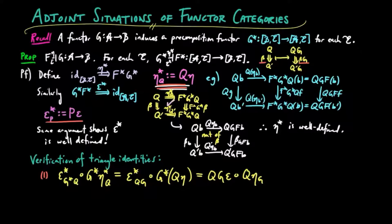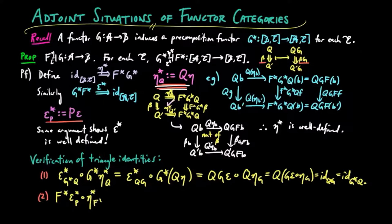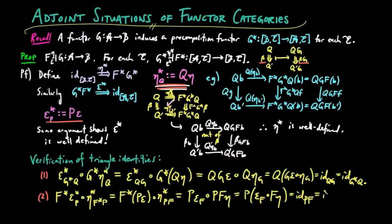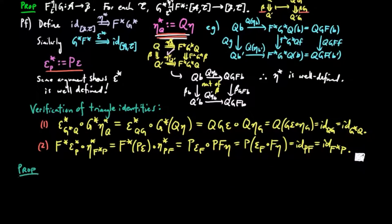By the triangle identity for F⊣G, we have this equal to the identity on QG, which is the identity on G*Q. Similarly, for the other triangle identity, we have F*(ε*P) ∘ η*(F*P) equal to the identity on F*P, which shows that G*⊣F* is an adjoint situation.